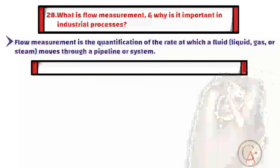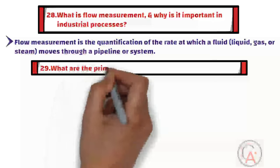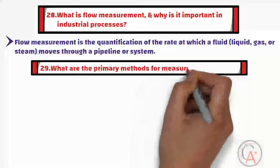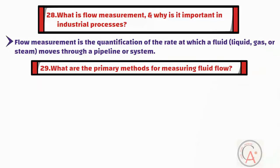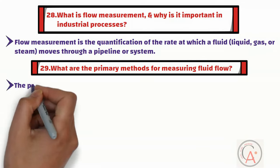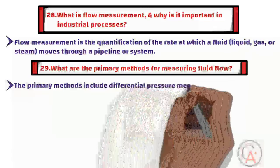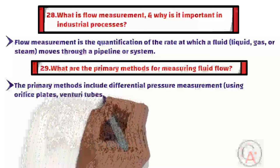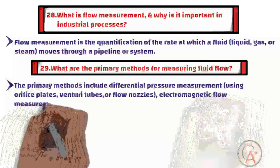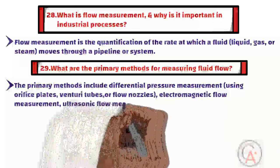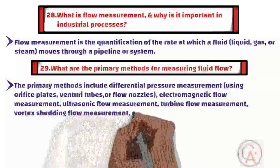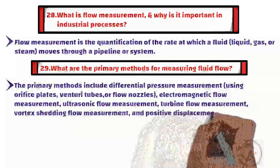The twenty-ninth question is: what are the primary methods for measuring fluid flow? The primary methods include differential pressure measurement using orifice plates, venturi tubes, or flow nozzles, as well as electromagnetic flow measurement, ultrasonic flow measurement, turbine flow measurement, vortex shedding flow measurement, and positive displacement flow measurement.